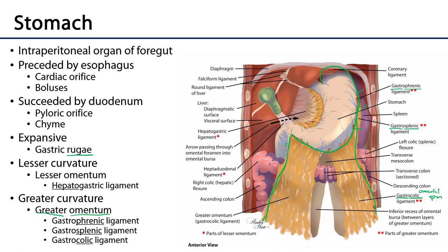There is also a lesser curvature of the stomach. The lesser curvature begins at the cardiac orifice and extends over to the pyloric orifice, and it consists of an attachment to the liver called the hepatogastric ligament — hepato meaning liver, gastric meaning stomach — which is part of the lesser omentum. The other part of the lesser omentum is the hepatoduodenal ligament, which runs from the porta hepatis of the liver down to the duodenum.